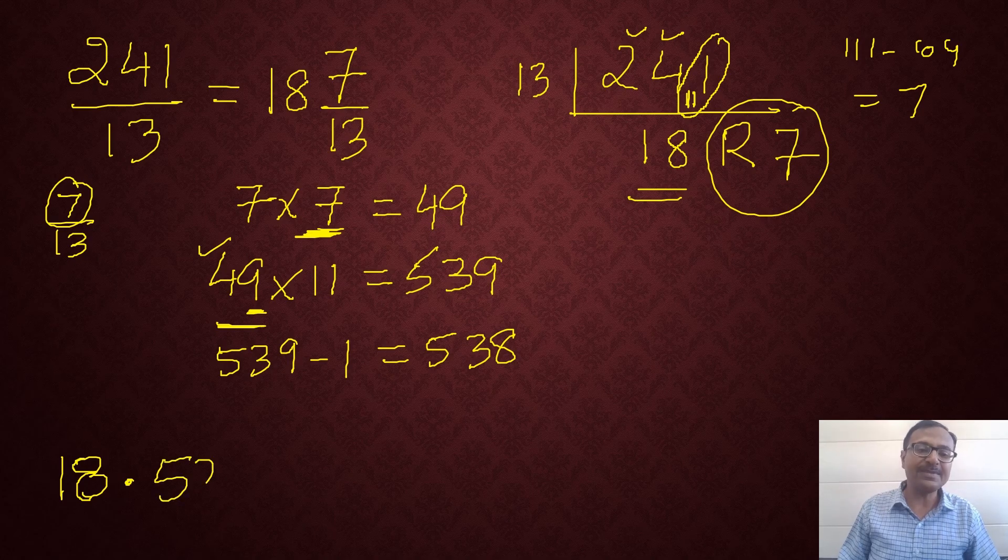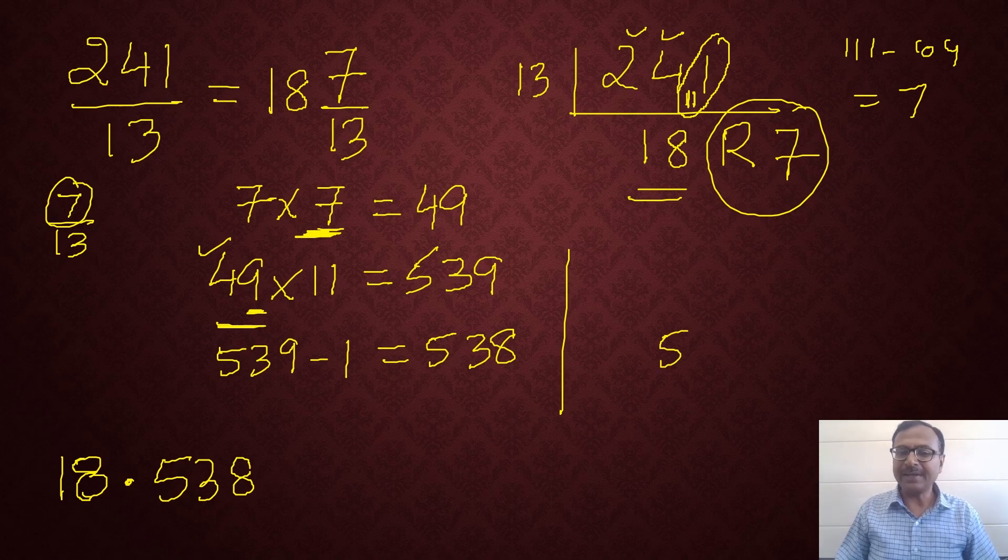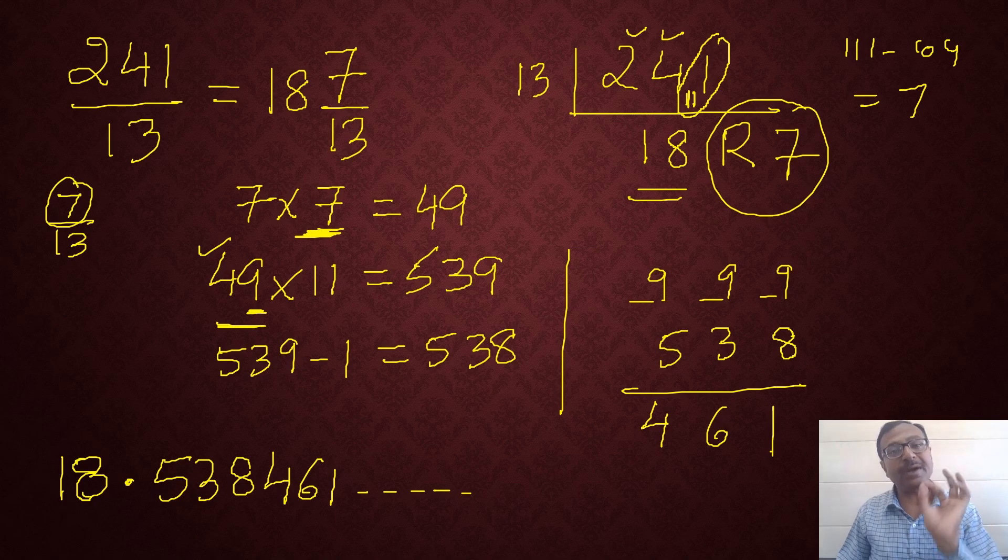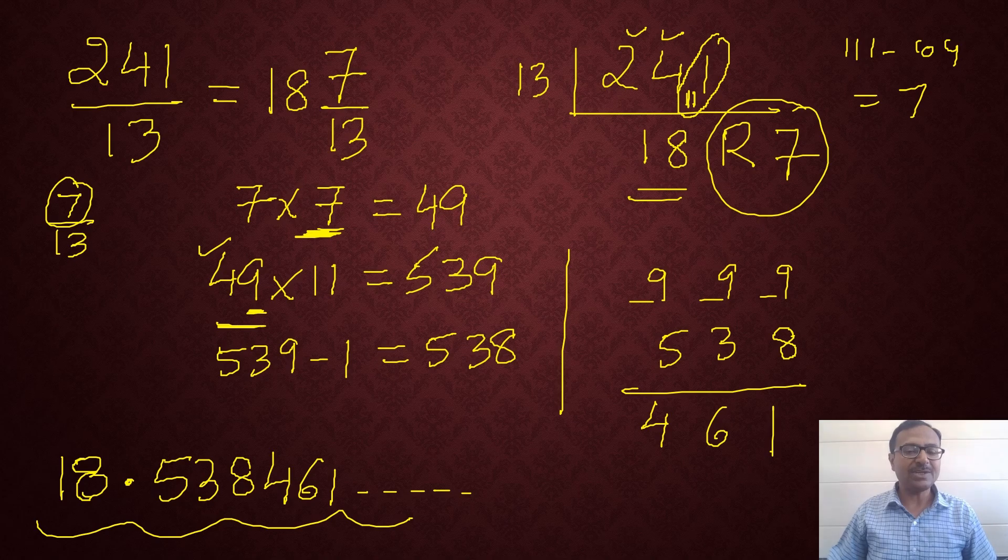So 538 forms the first 3 digits after the decimal when you have to find the decimal representation of 241 by 13. Now, what is the remaining part? The 9's complement is going to work. 538, right? So if you take the 9's complement of 538, that is subtract all digits from 9, you get 9 minus 5 is 4, 9 minus 3 is 6 and 9 minus 8 is 1. So write 461 here and put dot dot dot that means the decimal representation continues and pick up the calculator again. 18.538461 is the decimal representation of 241 upon 13.